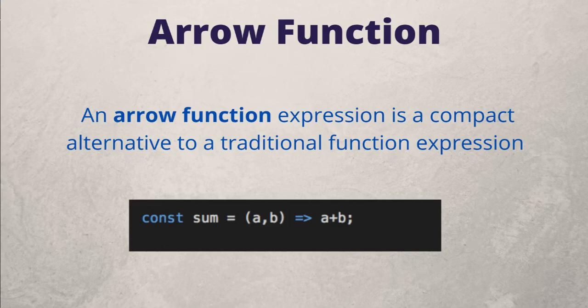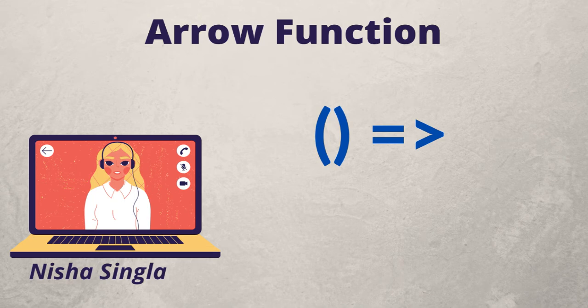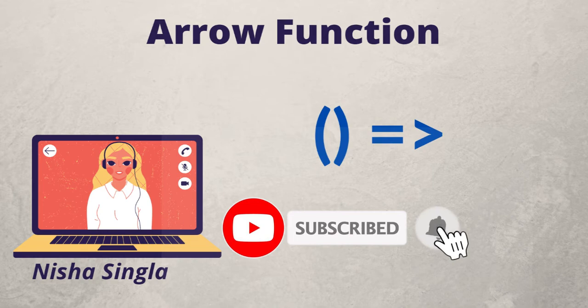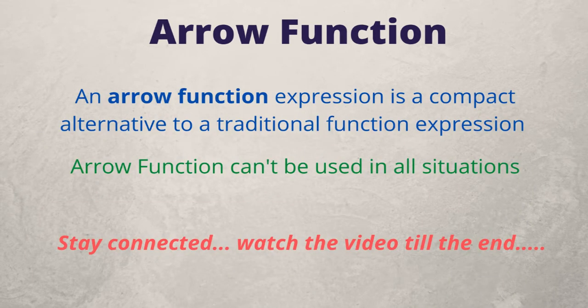Arrow function is one of the features introduced in ES6 version of JavaScript. It allows you to create functions in a cleaner way compared to regular functions. Hello everyone, I'm Nisha Singhla, welcome back to my channel. Today we're covering fat arrow functions — a new syntax to write code in JavaScript. There are some advantages and some disadvantages associated with it, and we're going to discuss both: where to use arrow functions and where we should not.